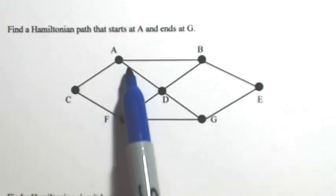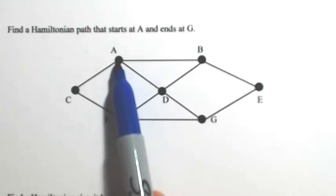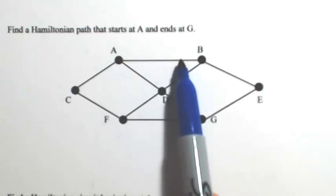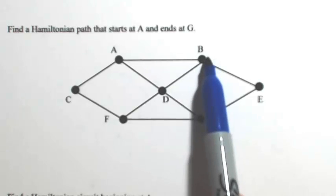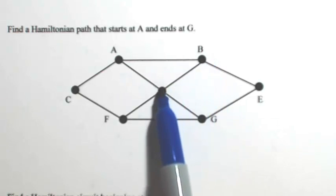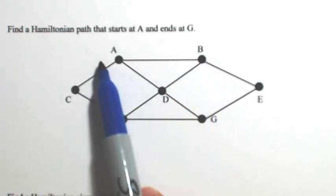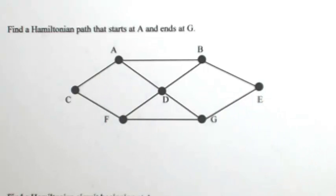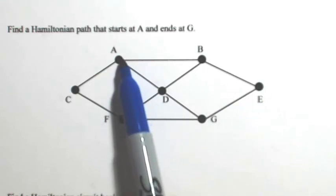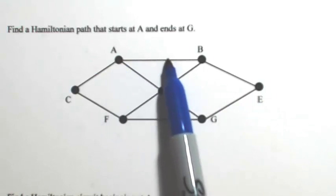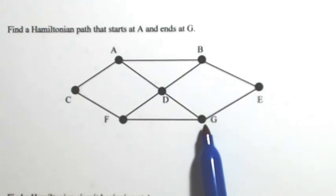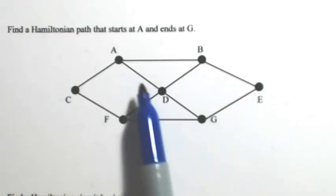Starting at A, if we were to travel in alphabetical order I would go to B and then to D, and then I would get trapped because I wouldn't be able to hit E until I hit G. If I were to go A to B to E, then I'm really trapped because I'd have to go to G and I haven't hit everything else.